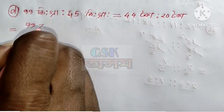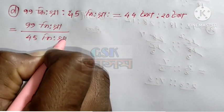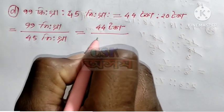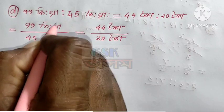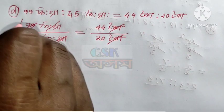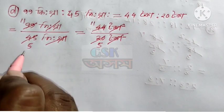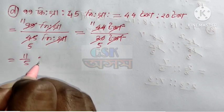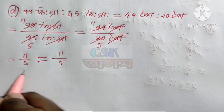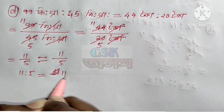This is 99 kg, and this is 45 kg, and this is 44 kg, and this is 40 kg, and this is 40 kg. This is 55 kg, and this is 45 kg, and 5 kg has 98 kg. 11 to 5.